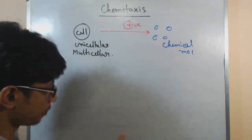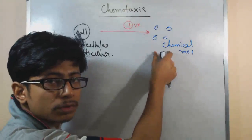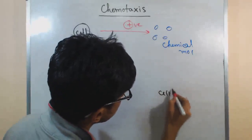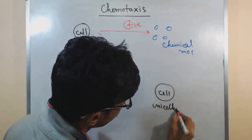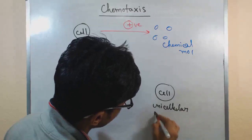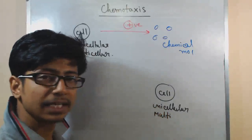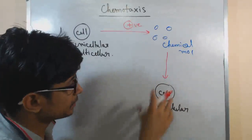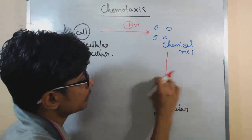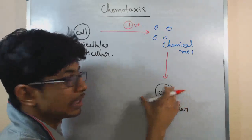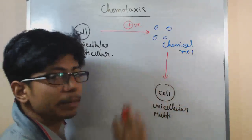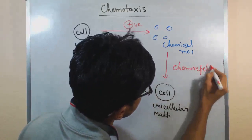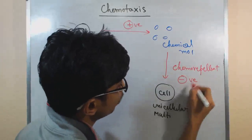But there is another kind of chemotaxis possible. Imagine the situation where there are certain chemical molecules — chemical signals or signaling molecules — that are present out there and are acting as a repellent for that cell. Again, there is a cell, unicellular or multicellular. That cell, due to the presence of those chemical factors, wants to go away from those chemicals. As chemical molecules start to surround that cell, it distracts the cell and the cell starts to move away. This is called chemo repellent.